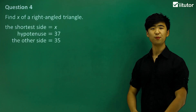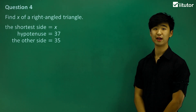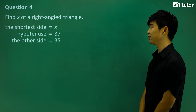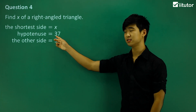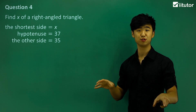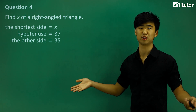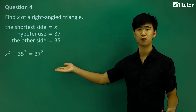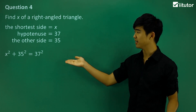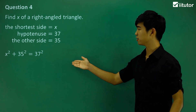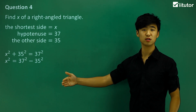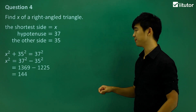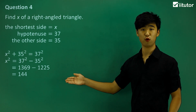Question 4: find x of a right-angled triangle where the shorter side is x, the hypotenuse is 37, and the other side is 35. Since the hypotenuse is 37, x and 35 must be the two shorter sides. Applying the Pythagoras theorem: x squared plus 35 squared equals 37 squared. We move 35 squared to the other side and use a calculator — we get x squared equals 144.